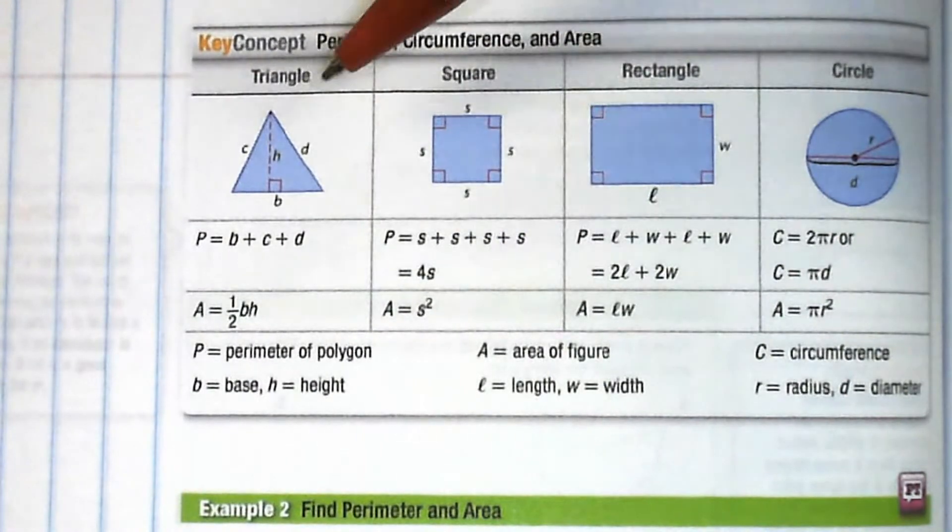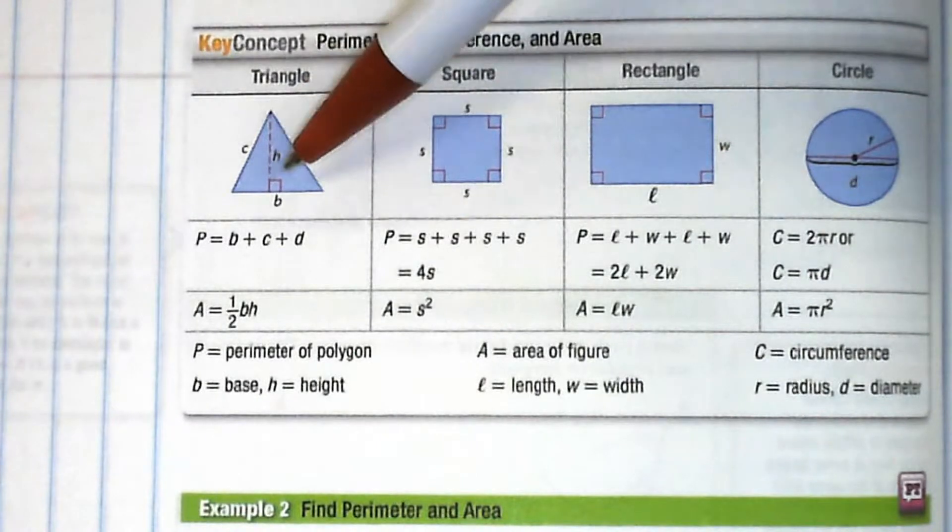For a triangle you're going to add up the three sides, all three of them added just like so.